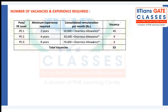For Project Engineer 1, a minimum of two years of experience is required and you will be paid ₹50,000 plus DA allowances as per central government rates. The number of vacancies is 40. For Project Engineer 2, four years of experience is required and you will be paid ₹60,000 plus DA allowances.